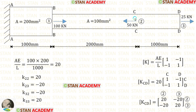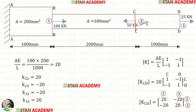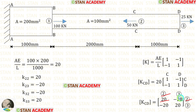Now let us make the element stiffness matrix for bar CCDD. Let us find AE upon L: area is 100, Young's modulus is 200, and length is 1000. After the calculation we get 20. Let us multiply this matrix with 20 to get the element stiffness matrix. In CC we have the second coordinate, so let us denote the first row and first column as 2. In DD we have the third coordinate, so let us denote the third row and third column as 3. Now let us take the stiffness matrix elements outside: K22, K23, K32, and K33.